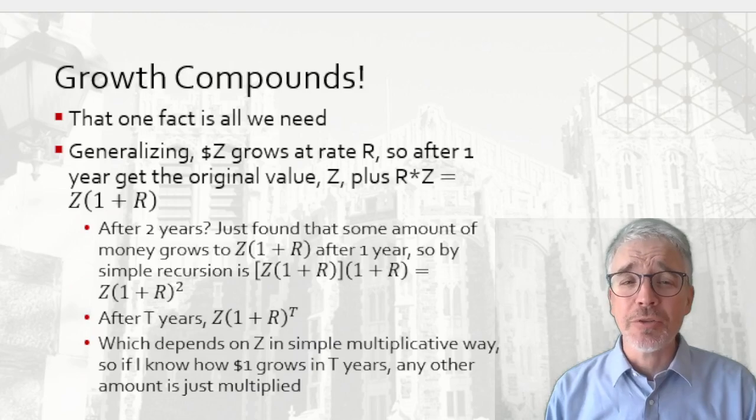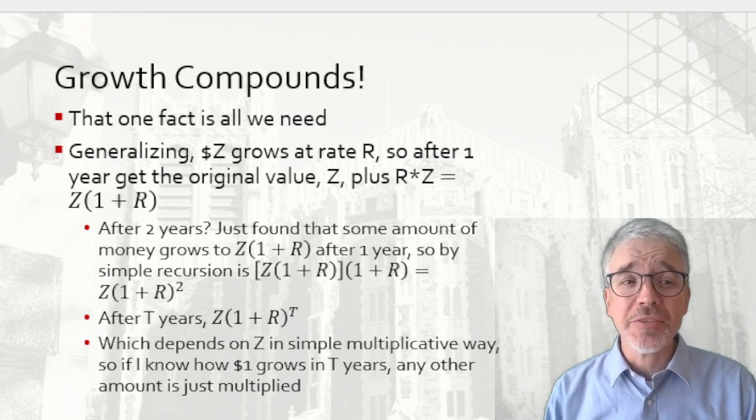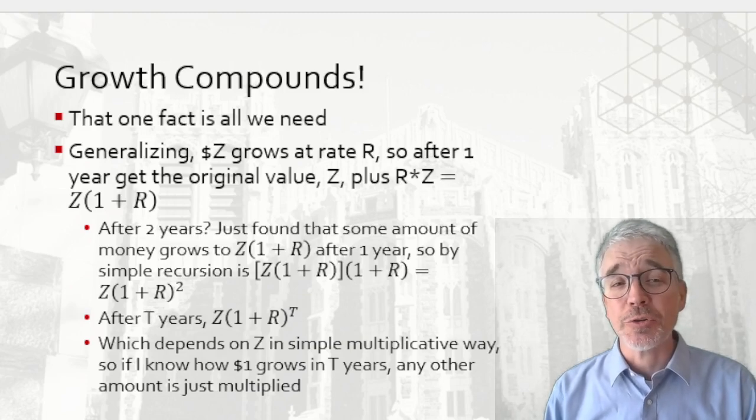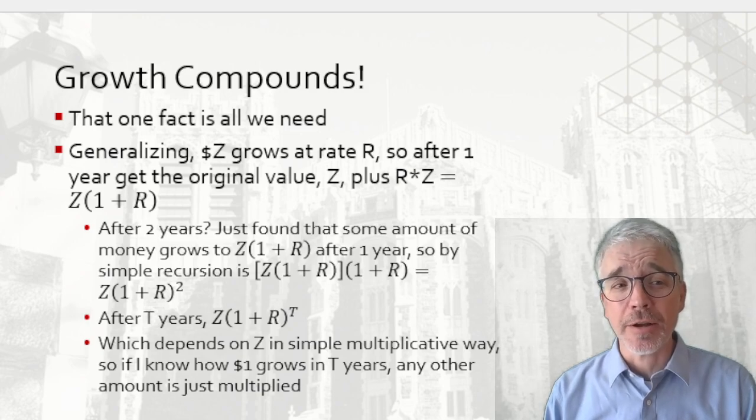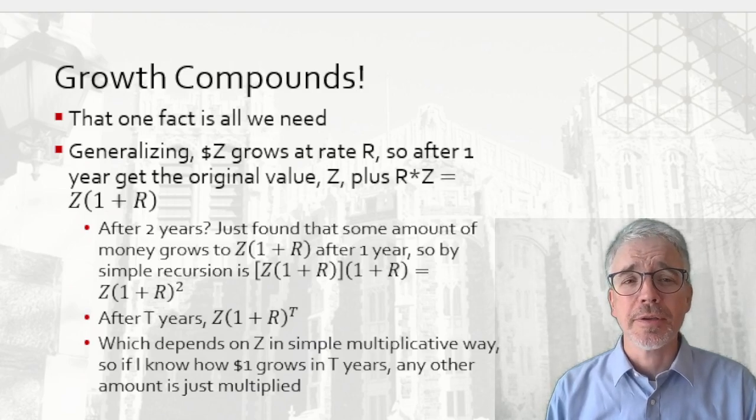After two years, I don't do anything new. I just solve recursively. Start with an amount Z, at the end, get Z times (1 + R). But this time, the new Z was already Z times (1 + R). So after two years, I have Z times (1 + R) times (1 + R). And I can simplify that formula to write it as Z times (1 + R) squared after two years.